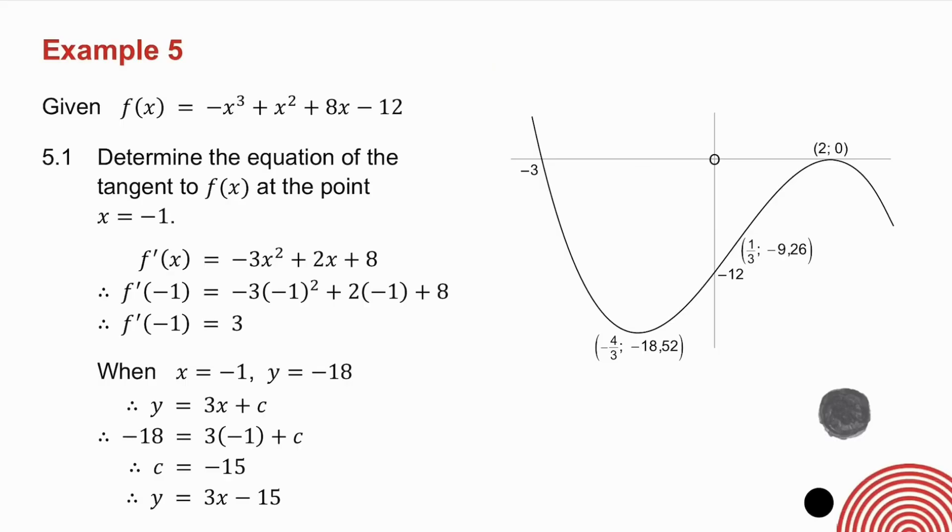5.1 asks you to determine the equation of the tangent to f(x) at the point x equals minus 1. In other words, what I want you to do is I want you to determine the equation of that line. You know that whenever you see the word tangent in calculus, you need to find the derivative. It's at the point x equals minus 1. So in place of x, put minus 1.